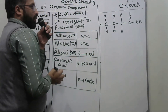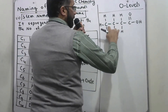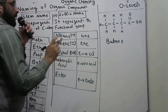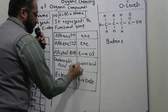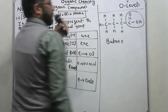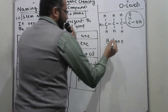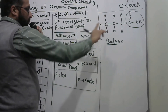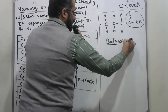For the next example, just count the carbon atoms: 1, 2, 3, 4 — four carbons, so we write 'but'. Because carboxylic acid is present (identified by the COOH group — C double bond O, O, H), for carboxylic acid we replace 'e' with 'oic acid'. The name is 'butanoic acid'.